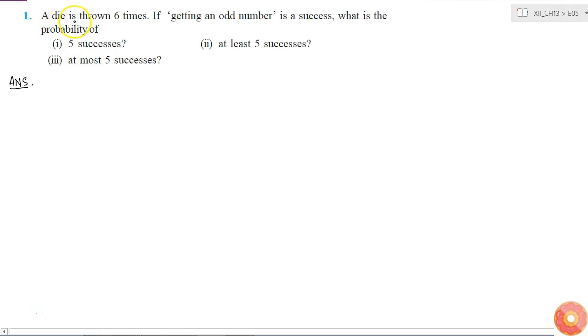In this question, a die is thrown 6 times and getting an odd number is a success. So the probability of success equals 3 odd numbers (1, 3, and 5) divided by total possibilities, which is 1/2. I'm calling this P.